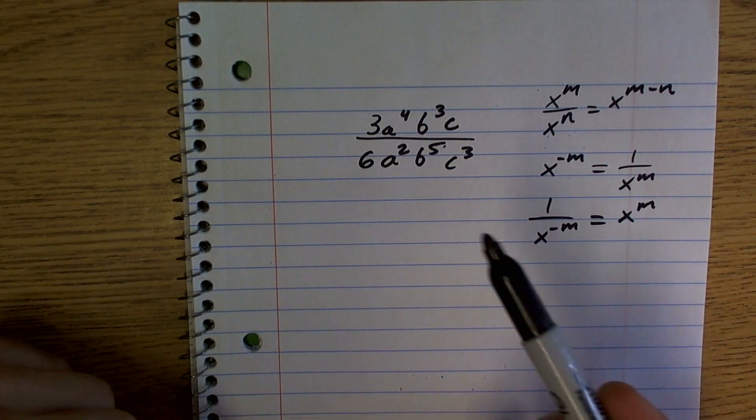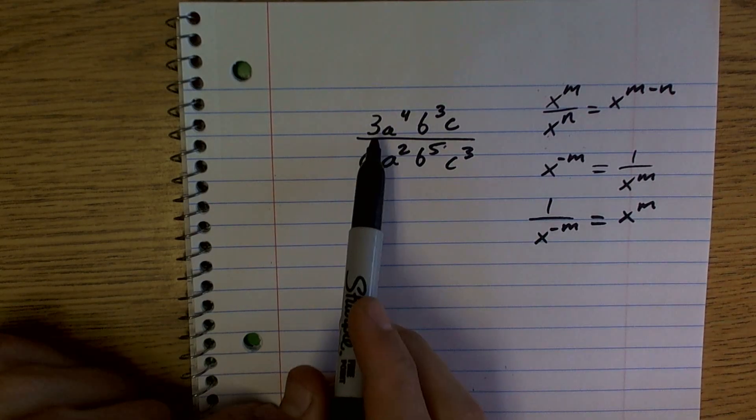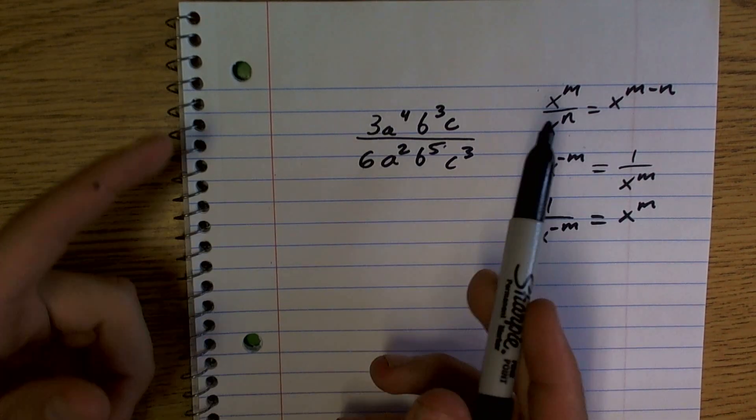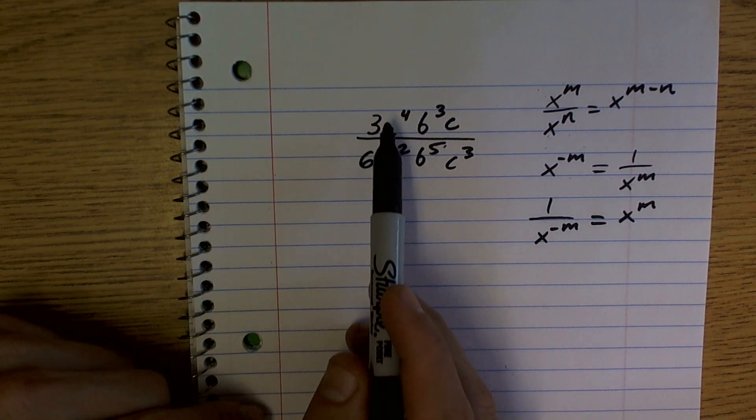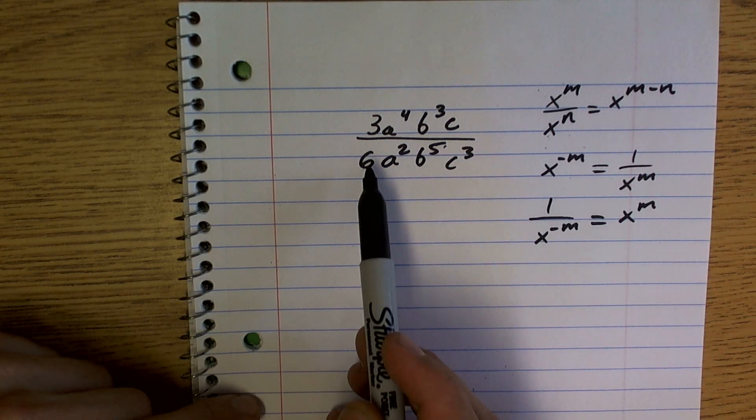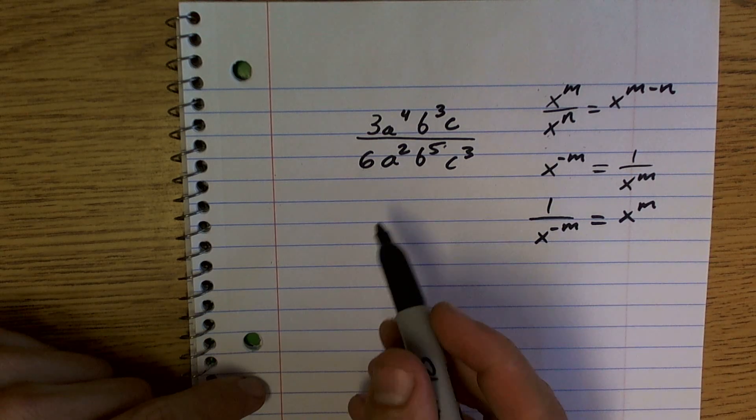Now we're just going to divide. Now, obviously, not divide into three, right? But what we can do is we can reduce this. So six-thirds can be reduced down to two, or one, one-half. Yep, one-half.